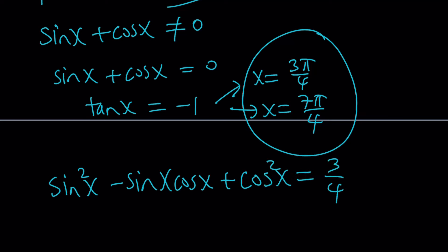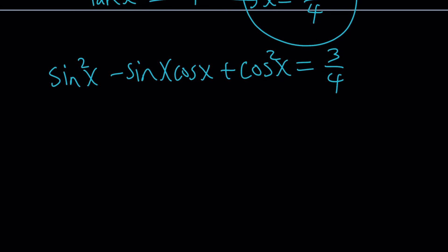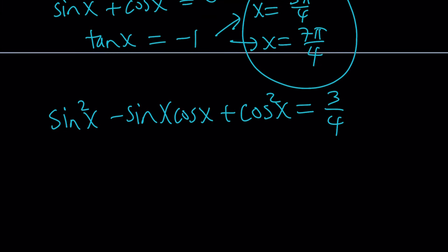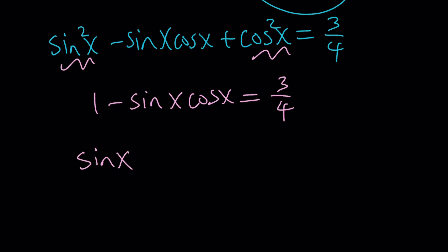Now we have the simpler equation: sine²x minus sine x cosine x plus cosine²x equals 3/4. Since sine²x plus cosine²x equals 1 by the Pythagorean identity, we get 1 minus sine x cosine x equals 3/4, which gives us sine x cosine x equals 1/4. This is the equation we're going to solve, and it shouldn't be too hard.